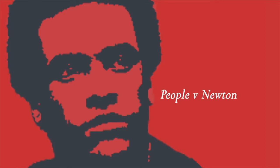Huey Newton was charged with murder, and the jury convicted him of voluntary manslaughter. On appeal, Newton claimed that the trial court erred in refusing to instruct the jury that unconsciousness is a complete defense. The appellate court agreed. There was testimony from which the jury could have inferred that Newton was unconscious at the moment he fired the fatal shots, and the appellate court reversed Newton's conviction.